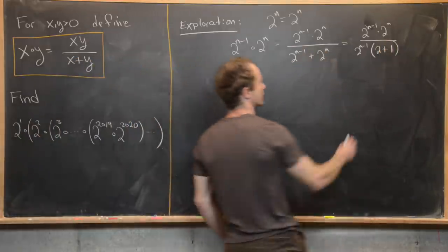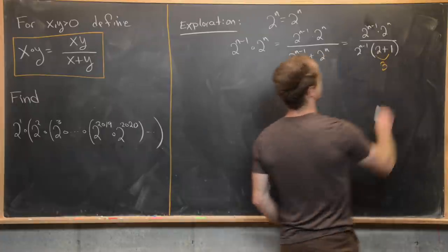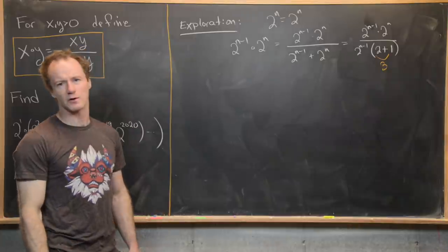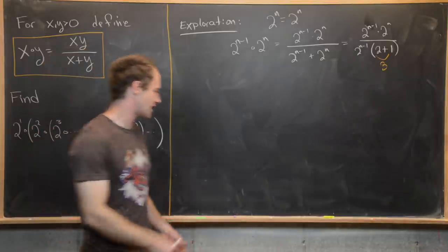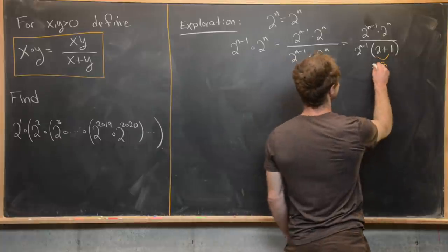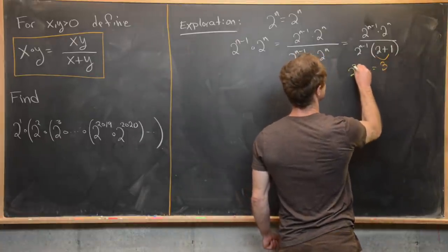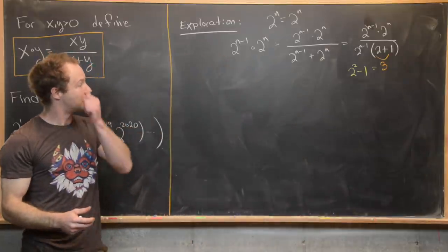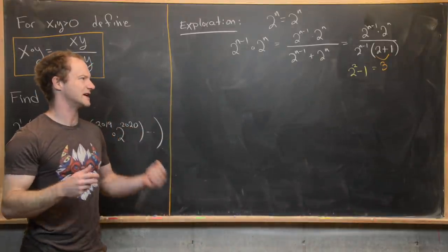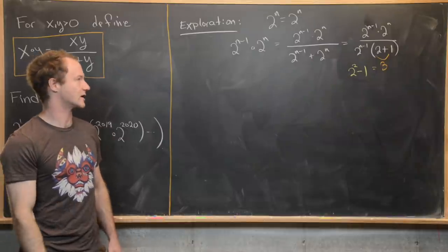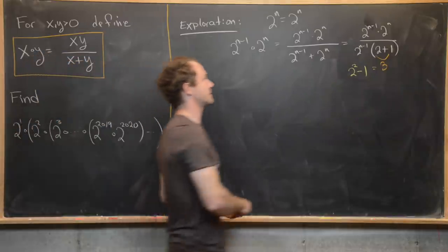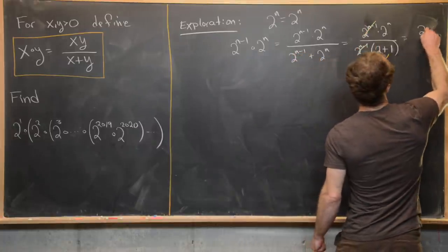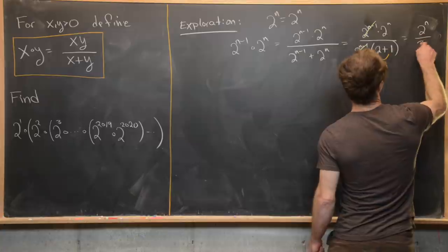The denominator factor is definitely equal to 3 — that's either 2 to the first plus 1 or 2 to the second minus 1; at the moment it's a bit unclear which structure we have. But what is clear is that we can cancel, and we're left with 2 to the n over 3.